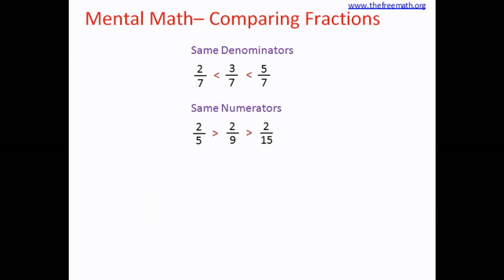That means 2 over 5 is bigger than 2 over 9, which is bigger than 2 over 15. Typically, when we have fractions where neither the denominators nor the numerators are the same, we calculate the LCM, make the denominators the same, and then compare.